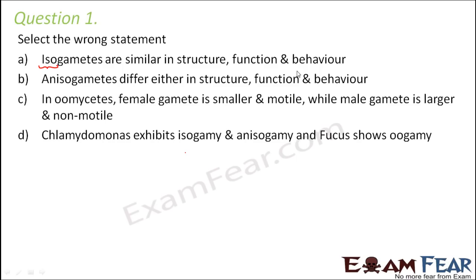Option two — anisogametes differ in structure, function and behavior. Aniso means different, so these are heterogametes. This statement is also correct. But we have to find the wrong statement, so let's go to the third one.